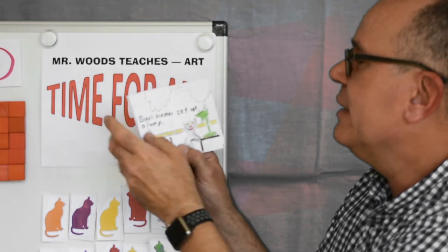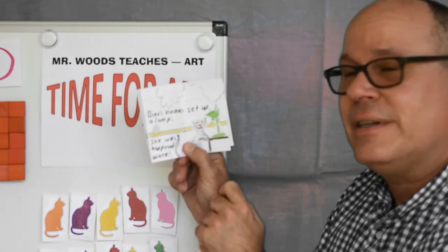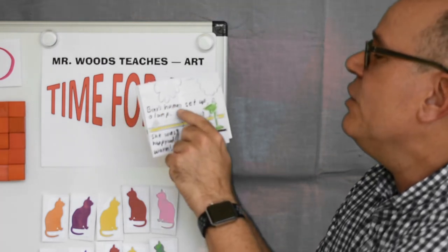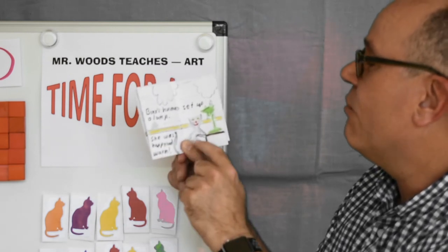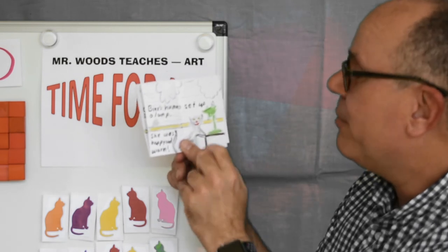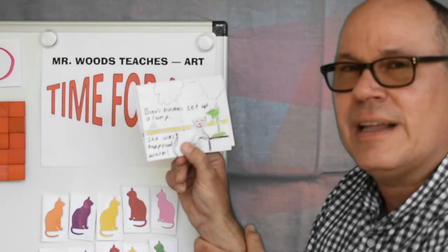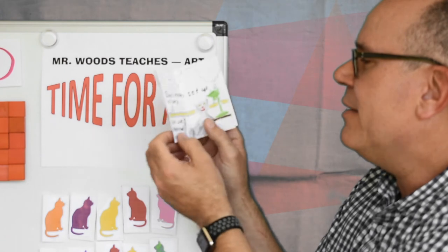And then here's the solution. The clouds are still out. It says, Binks's human set up a lamp. See the lamp right here? She was happy and warm. See how she's smiling, and her paws are up on the table so she can get closer to the lamp? And that's the end of my book.